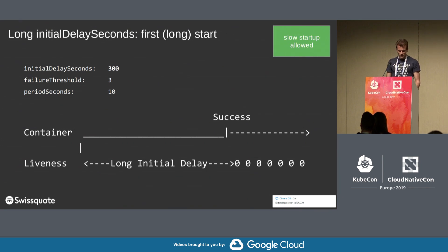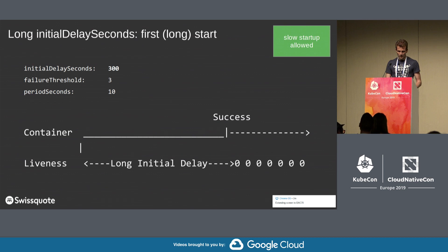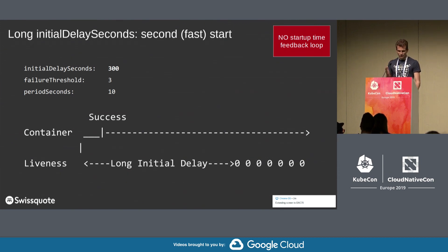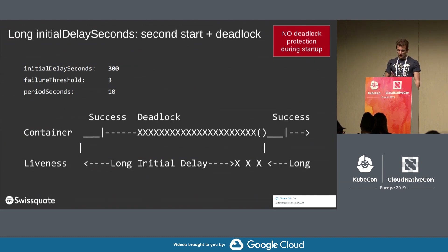The first strategy would be to delay the probe execution. We set initial delay seconds long enough for the application to finish the data initialization. Then on restart, as you can see, it starts much faster, but the probe is still disabled for the rest of the initial delay. We have no feedback on the container status. If the container crashes during this period, we have no way of knowing and no way of acting. So we have to wait until the end of the initial delay and three probe failures before it gets restarted.